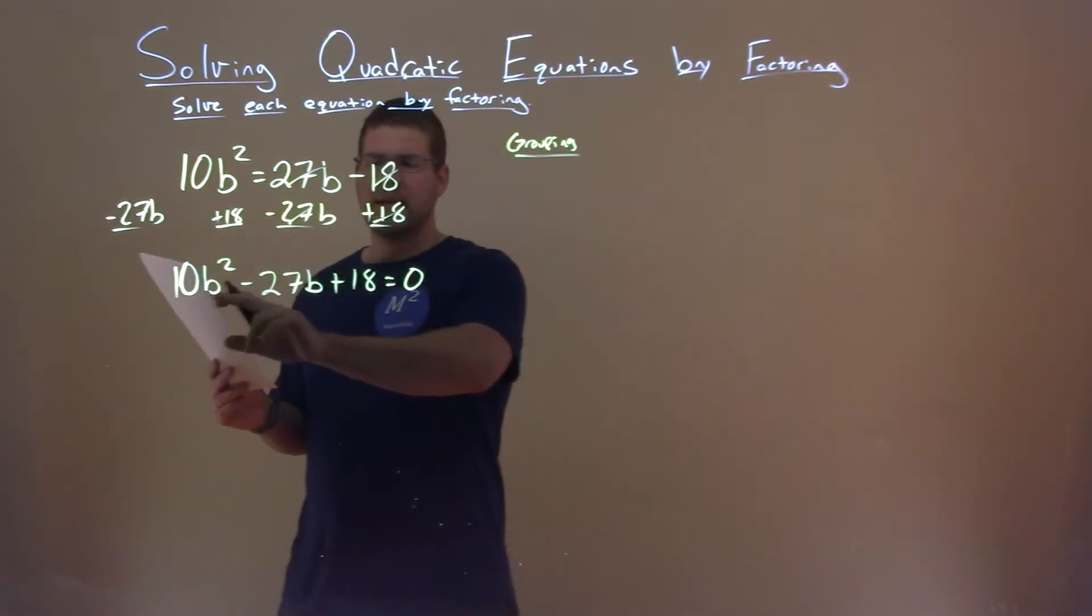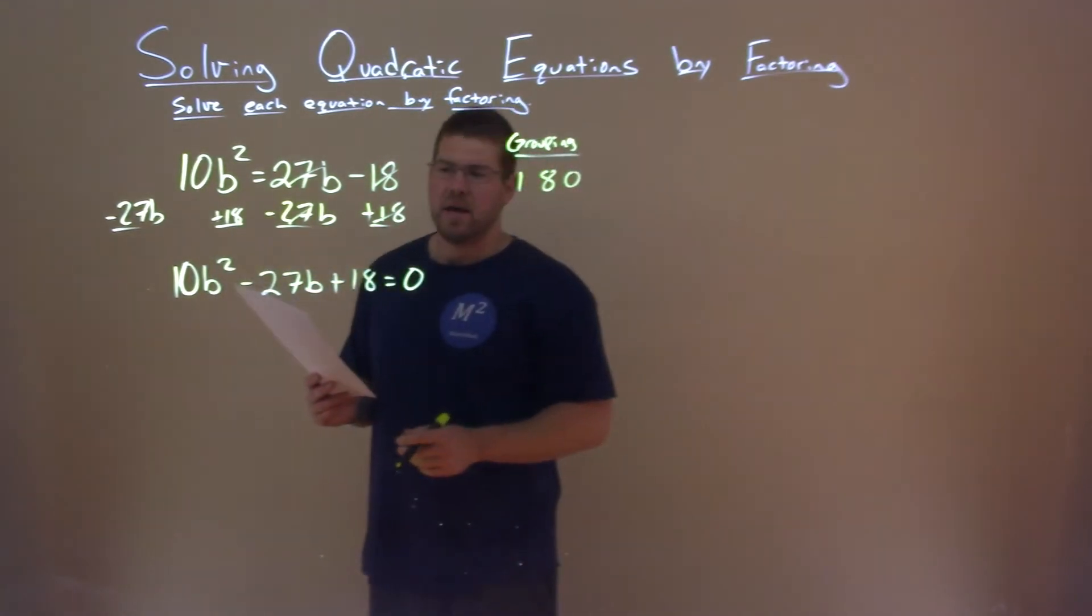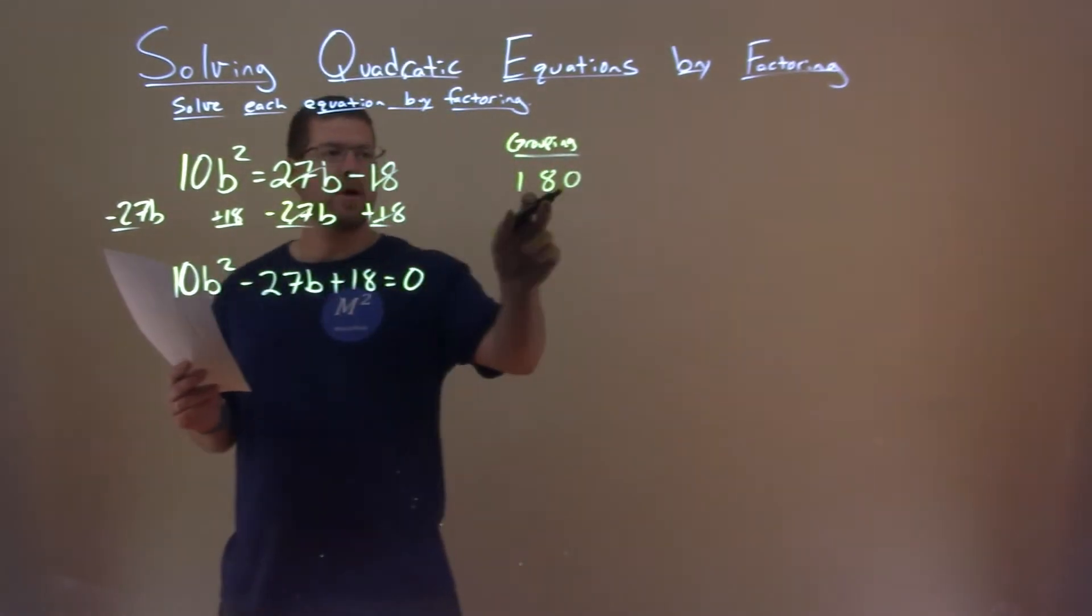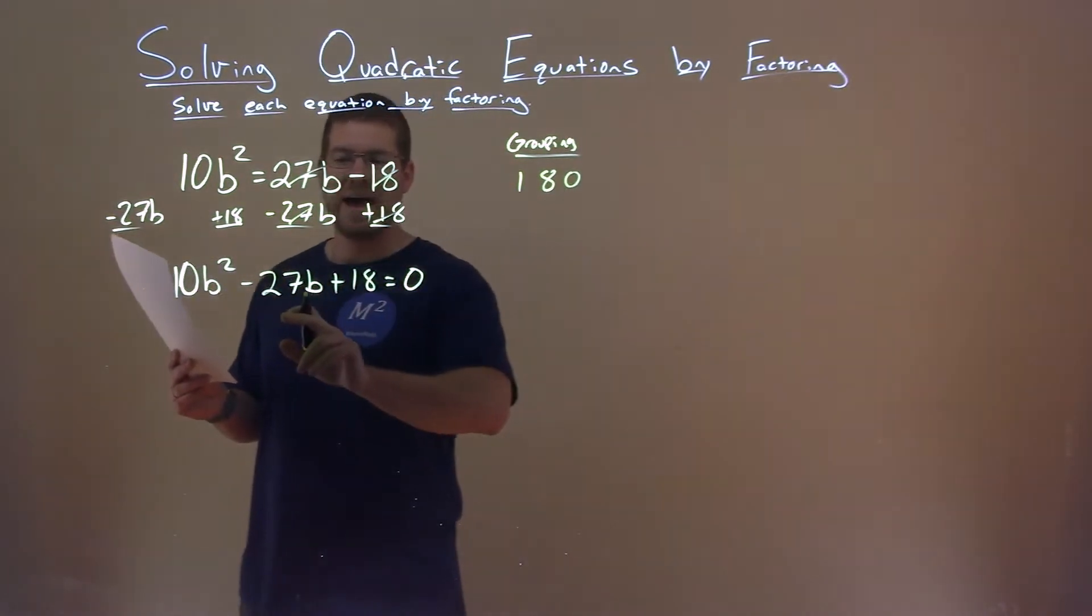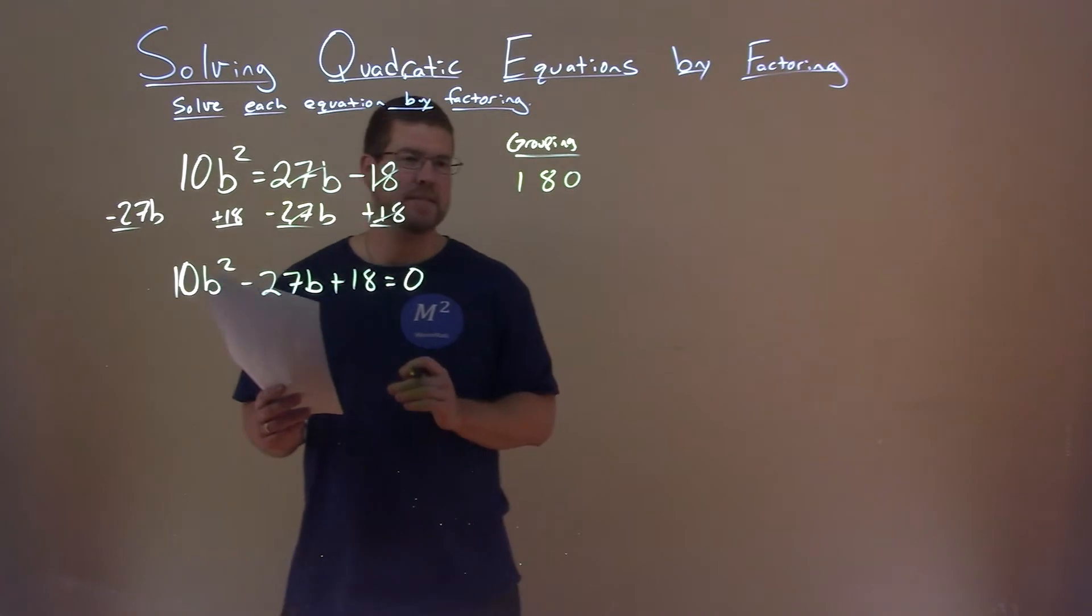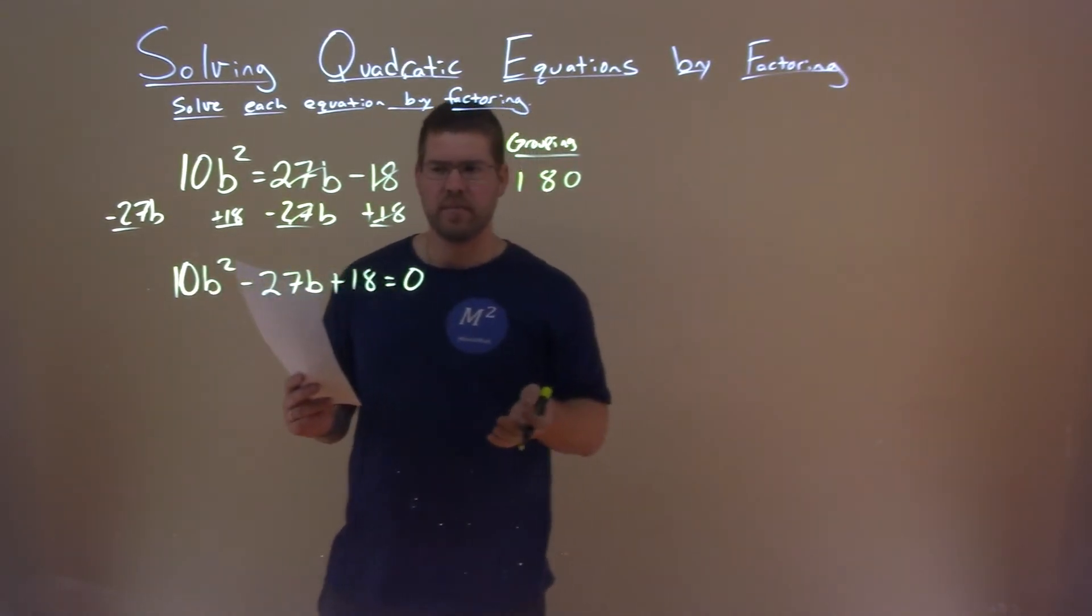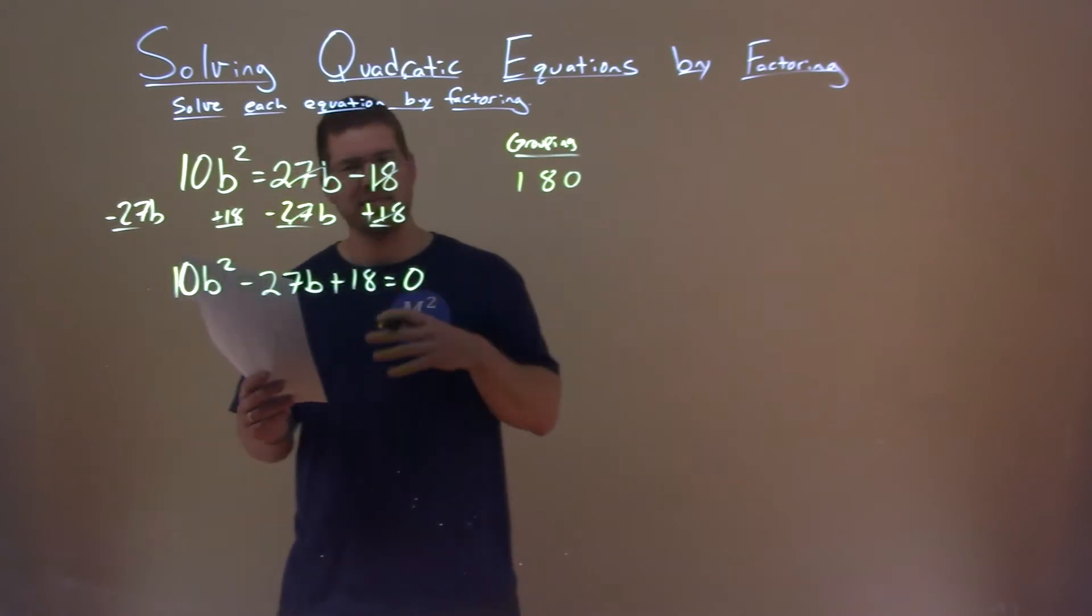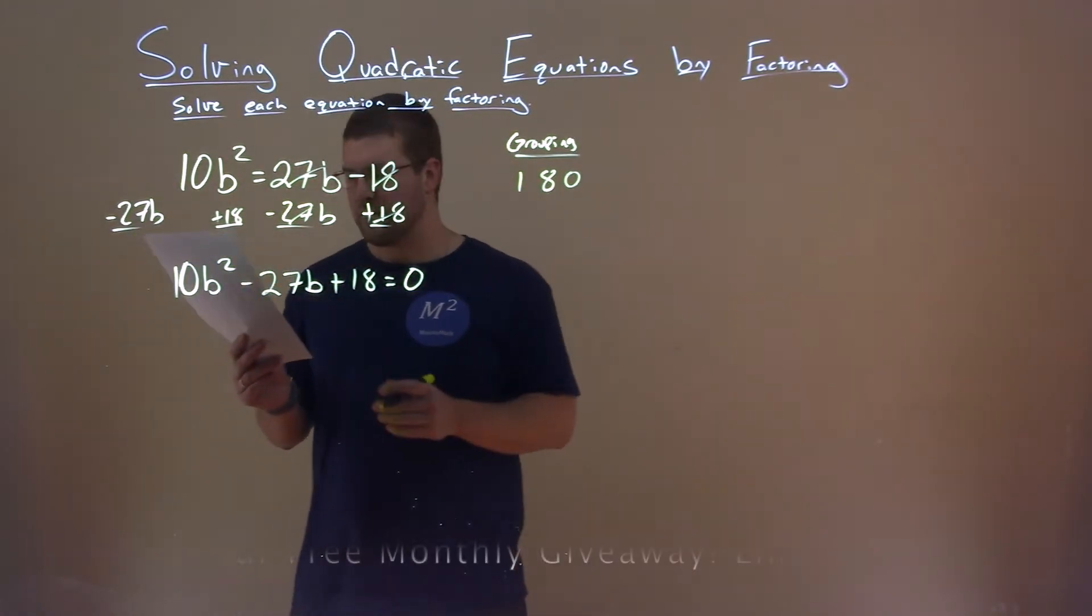Well, I'm going to take 10 times by 18, and I get 180. I'm going to find two numbers that multiply to be positive 180 but add to be a negative 27. I'm not going to go through all the factors of 180. I'm going to kind of jump through ones that I think would work and see if anyone jumps out at me that adds to be a negative 27.